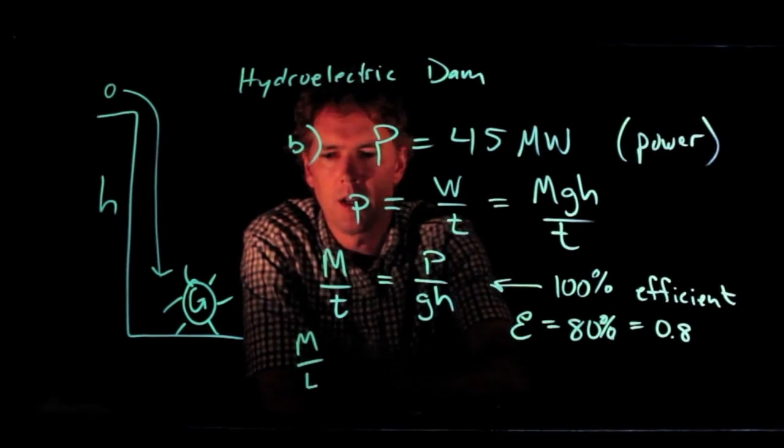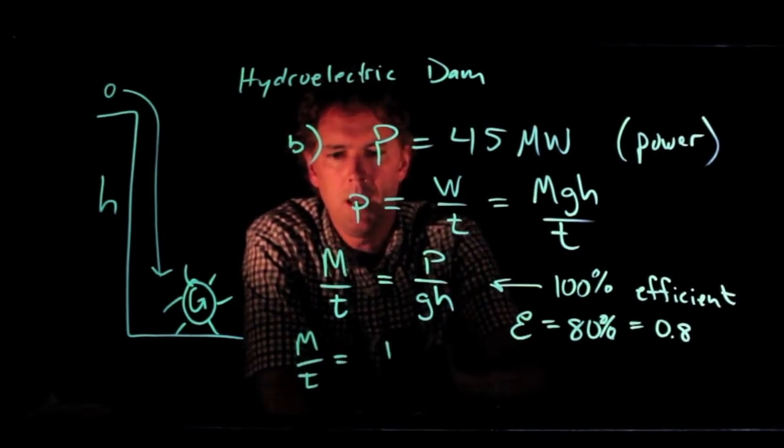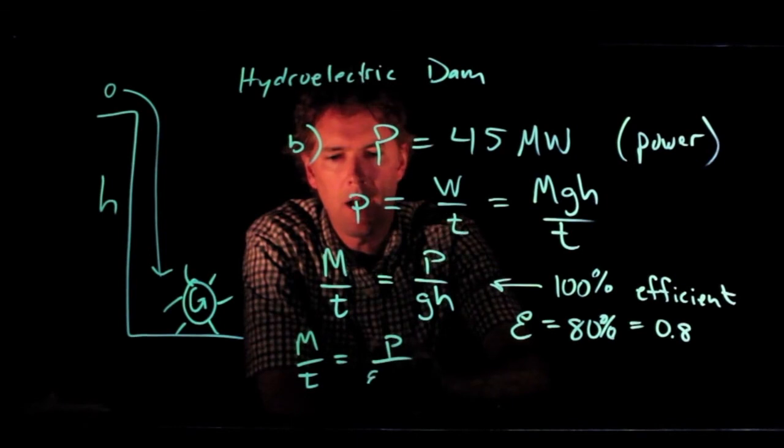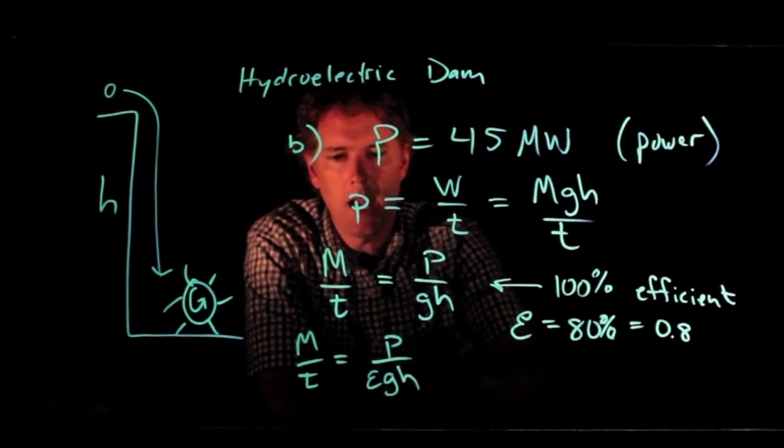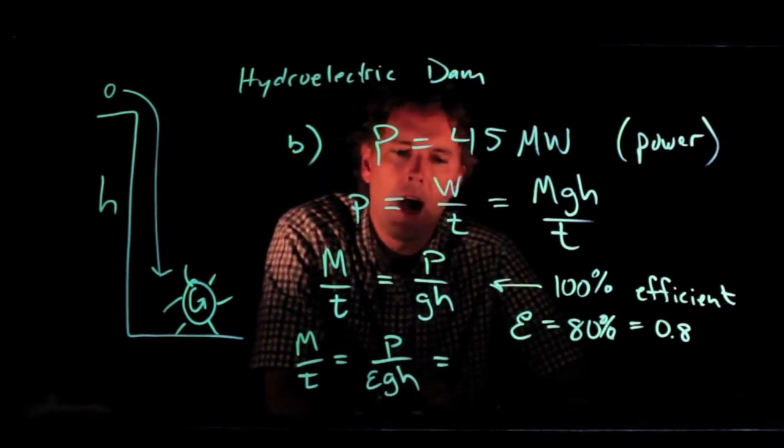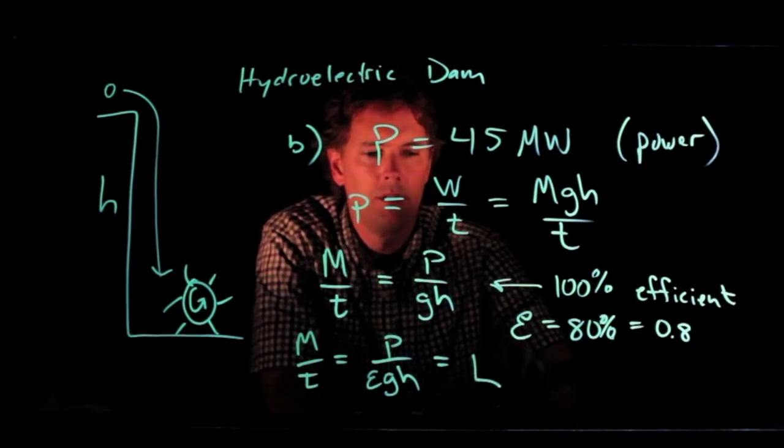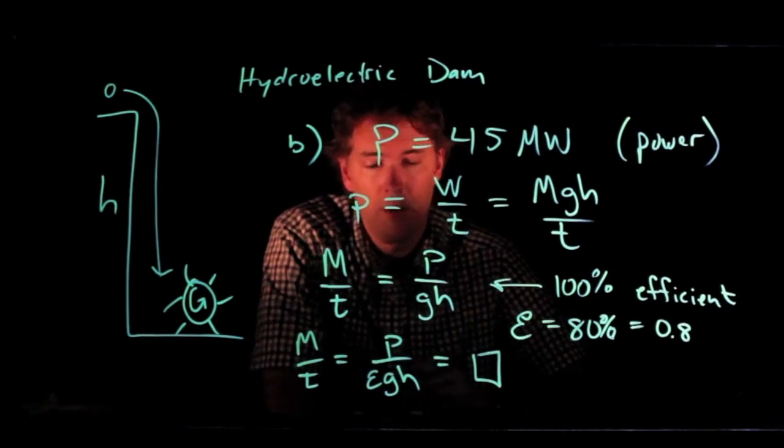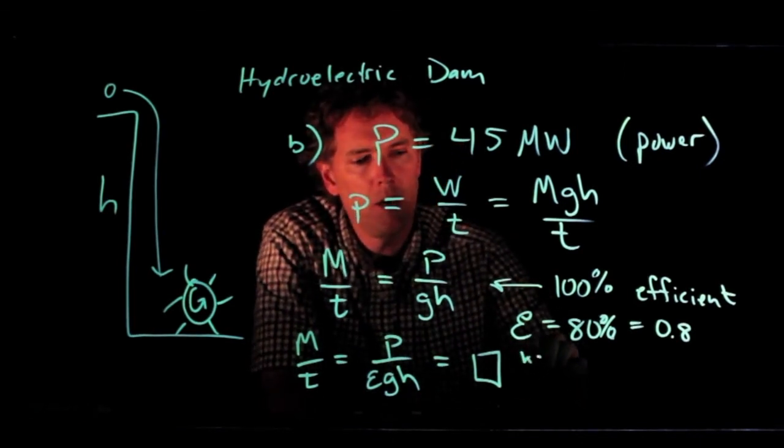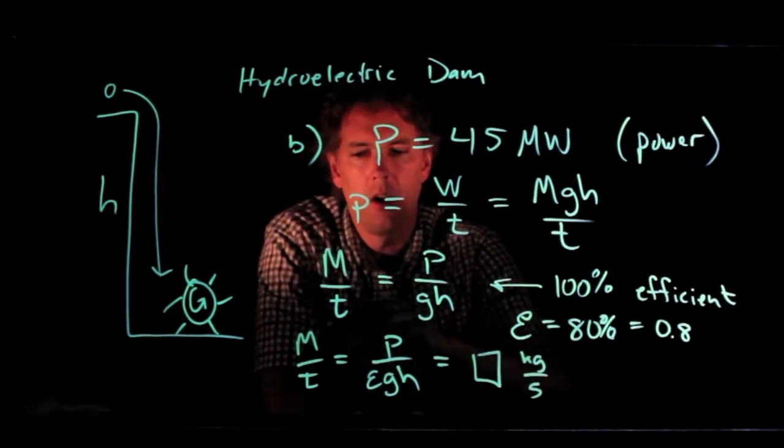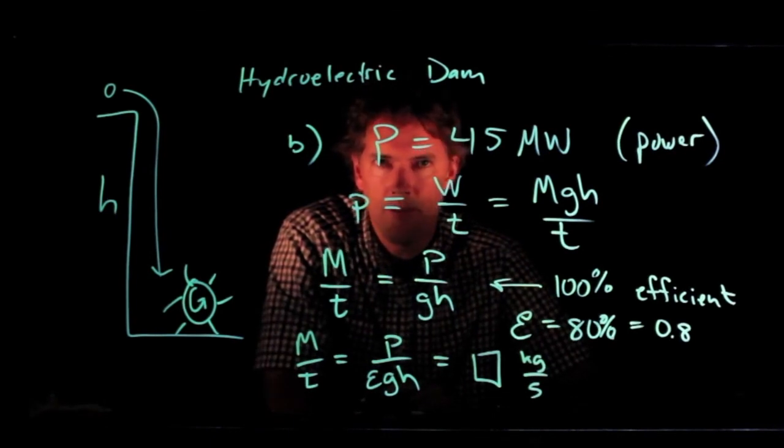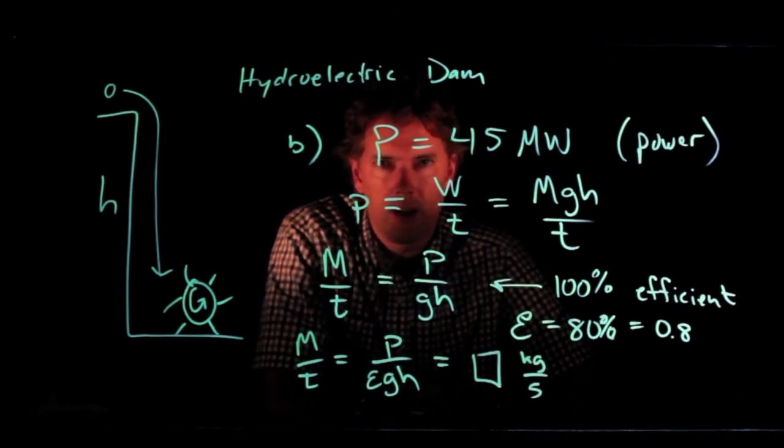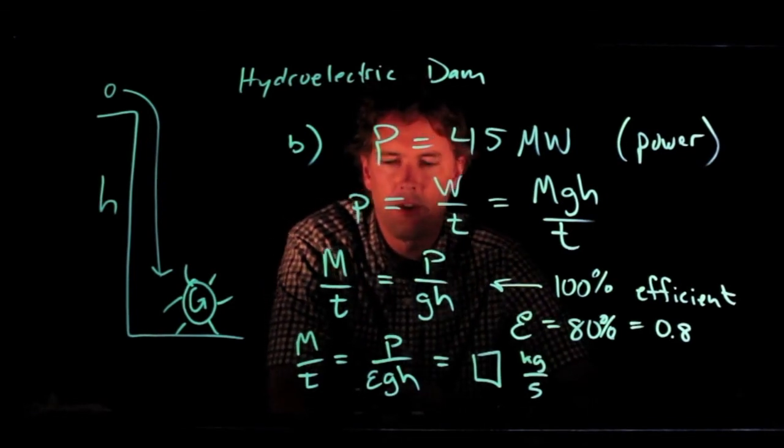So what's the real answer here? It is P over epsilon gh. And now if you plug in those numbers, you'll get an answer that will make sense. It will be a big number, kilograms of water per second. Good luck with that one. If you have any questions, come see me in office hours. Cheers.